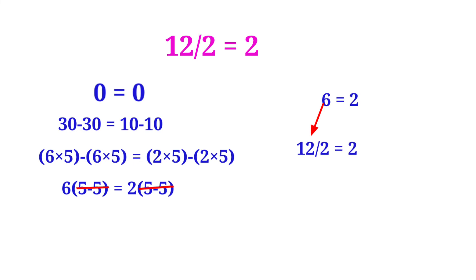Now we can write the 6 as 12 by 2. So 12 by 2 is equal to 2. Now it is proved. But it is not supported in mathematics. This is not a right process.